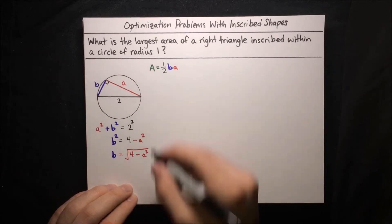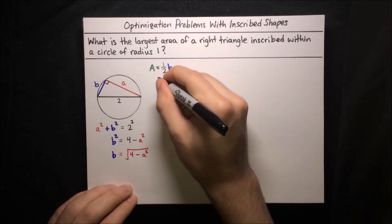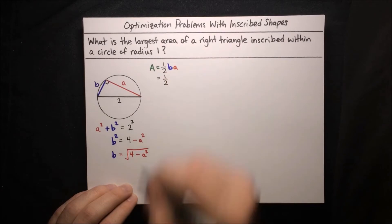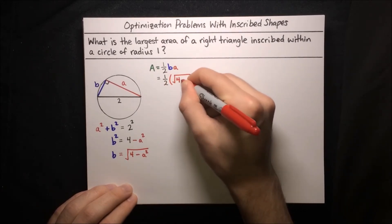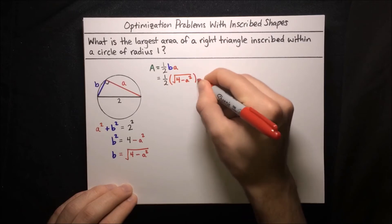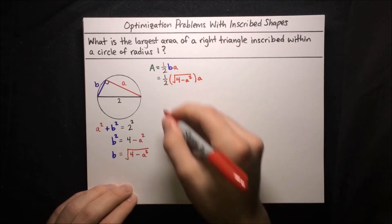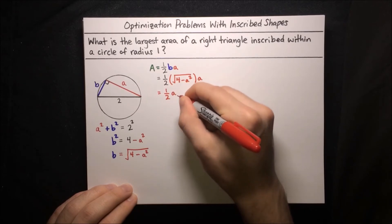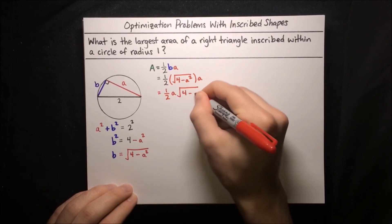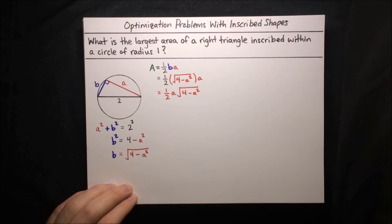We can substitute that into our area formula. Area equals one half times b, which is the square root of 4 minus a squared, times a. Simplifying, this is equal to one half times a times the square root of 4 minus a squared. Now we've got an expression for the area in terms of a single variable, and we can maximize it by finding its stationary points.